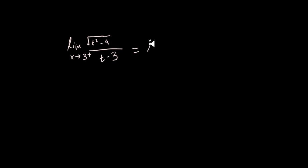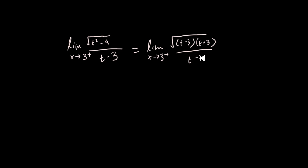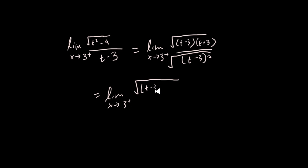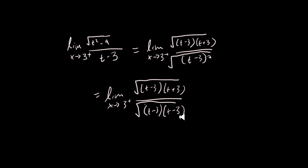We factor to get T minus 3 times T plus 3, all over T minus 3. But the numerator is under a square root sign, so we can write it as the square root of (T minus 3)(T plus 3) divided by the square root of (T minus 3) times (T minus 3). We can cancel those out to get T plus 3 over the square root of T minus 3.